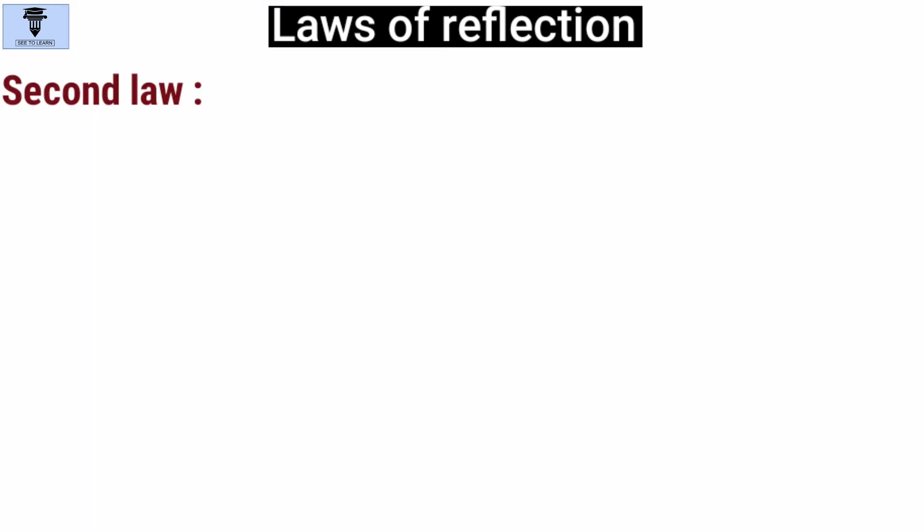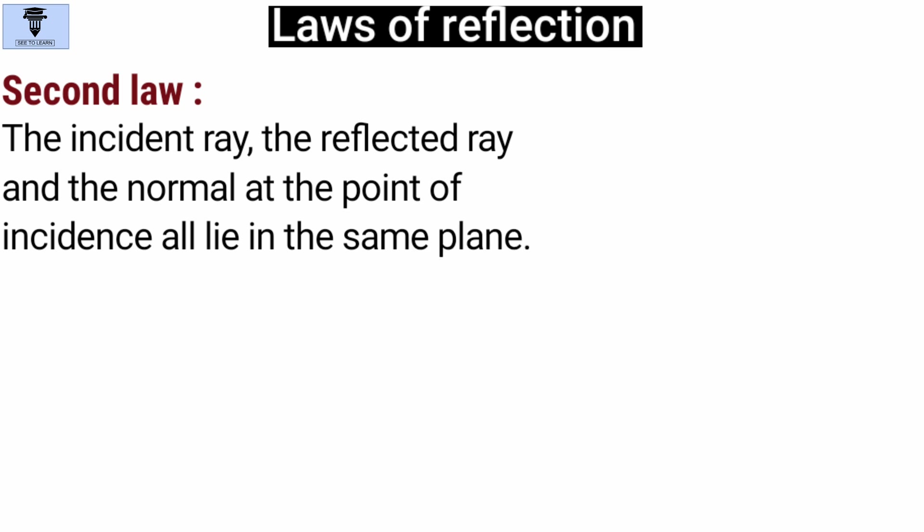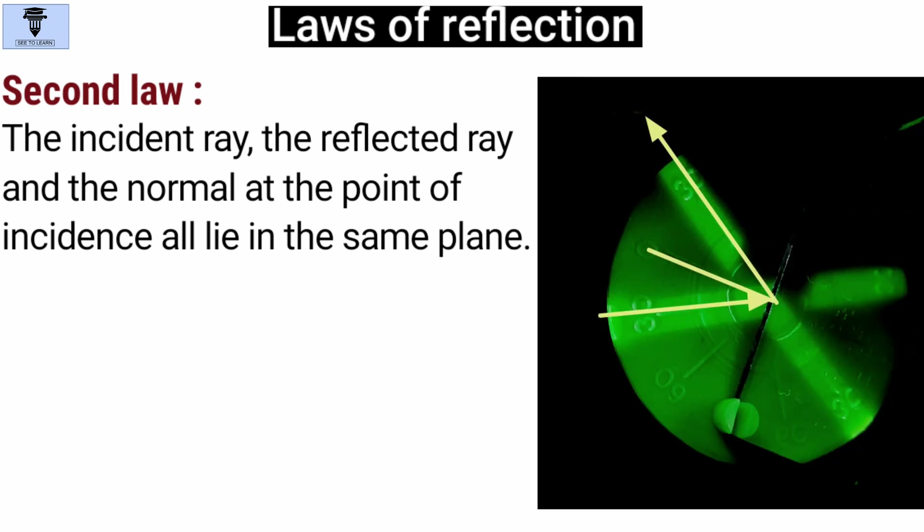The second law states that the incident ray, the reflected ray, and the normal at the point of incidence all lie in the same plane. So, you can see here that all of them lie on this disc, which represents a plane.